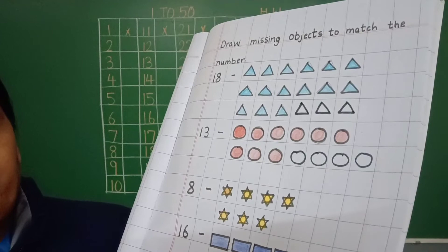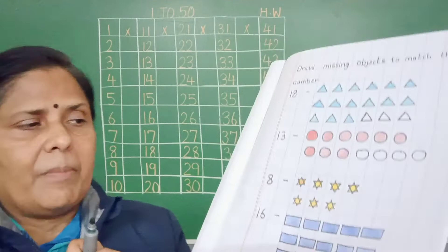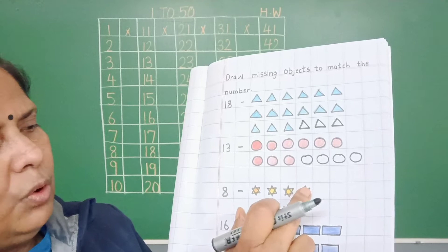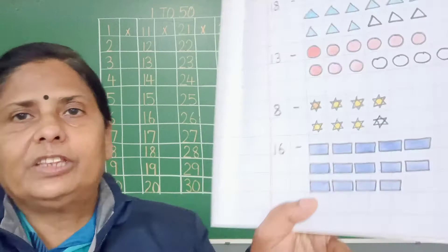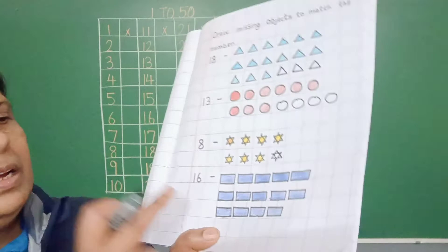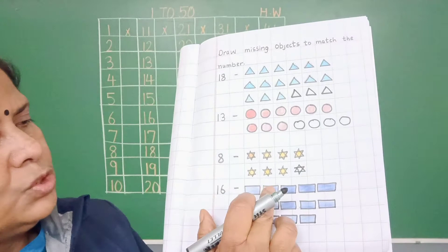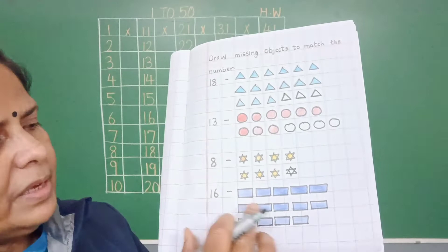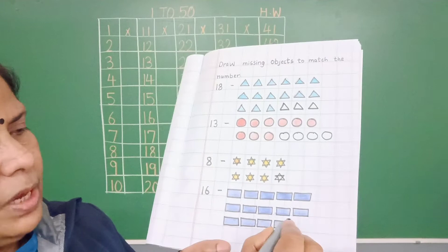Here you can see number 8 is there. I have drawn stars. One, two, three, four, five, six, seven, eight. How many stars are coming? One, two, three, four, five, six, seven, eight, nine, ten, eleven, twelve, thirteen, fourteen.